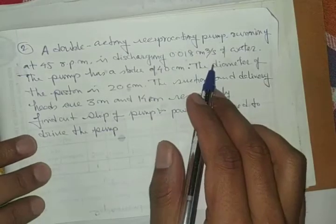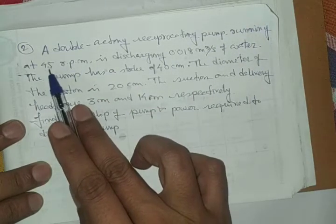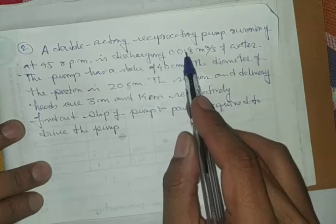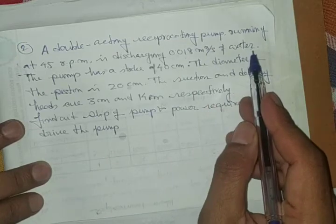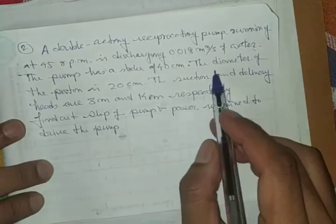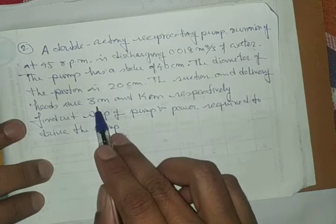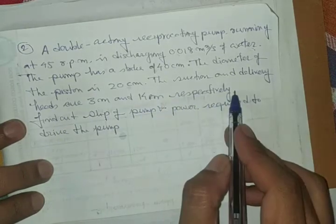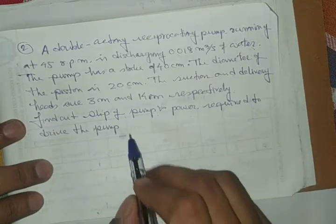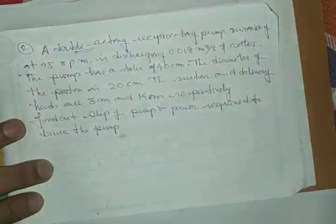Let's take another problem. A double acting reciprocating pump running at 45 RPM is discharging 0.018 m³ per second of water. The pump has a stroke of 40 cm and diameter of the piston is 20 cm. Suction and delivery heads are 3 meter and 14 meter respectively. Find the slip of the pump and power required to drive the pump. This is a double acting reciprocating pump.